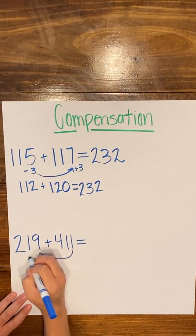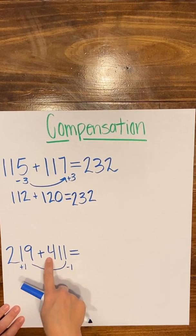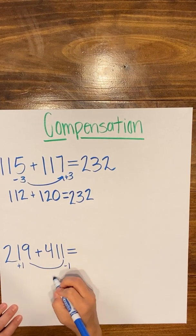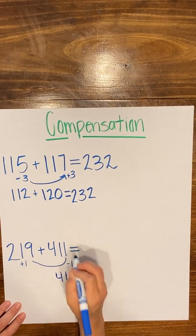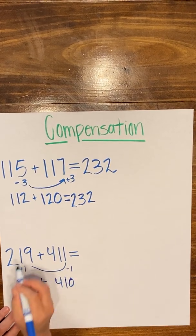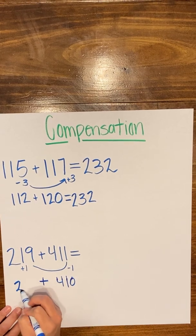So here, I'm going to move 1 and that's going to take 411 down to 410. If I take 1 away and give it to my 219 and I add that 1, it's going to give me 220.